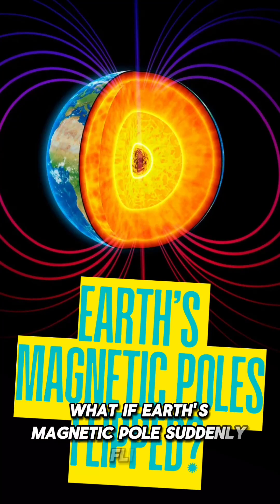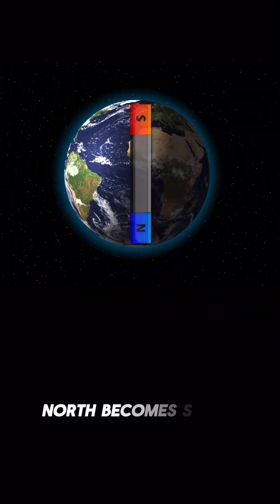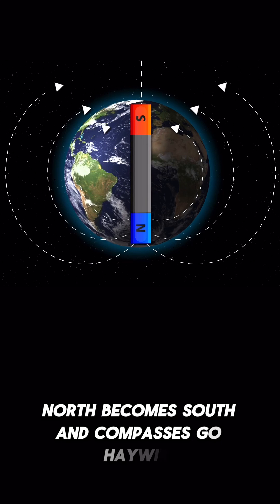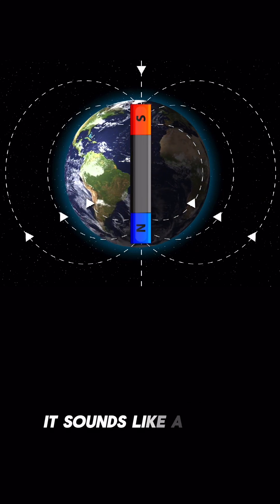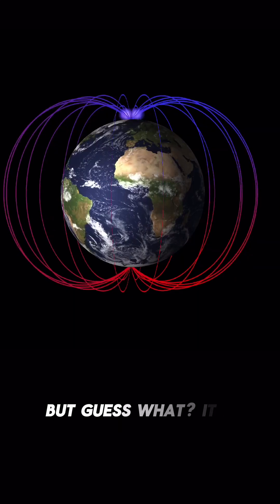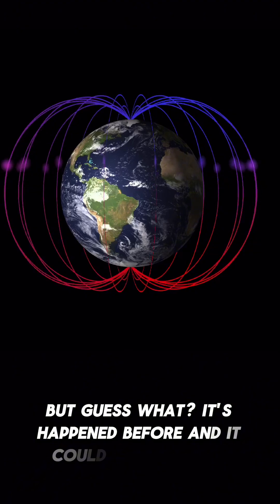What if Earth's magnetic poles suddenly flipped, north becomes south, and compasses go haywire? It sounds like a sci-fi movie, but guess what? It's happened before. And it could happen again.